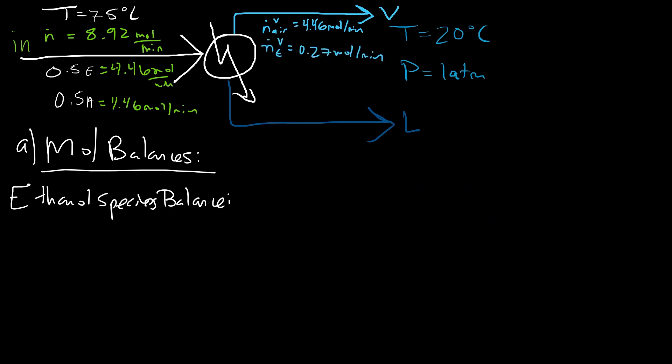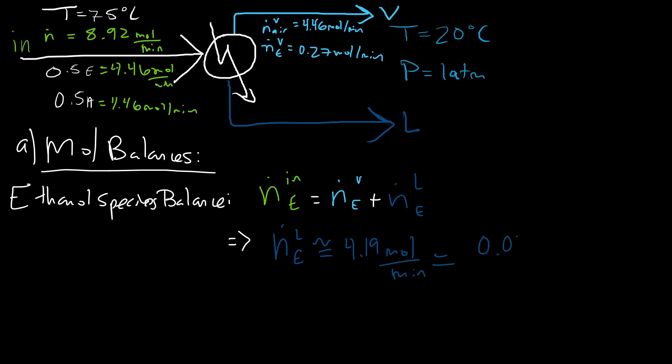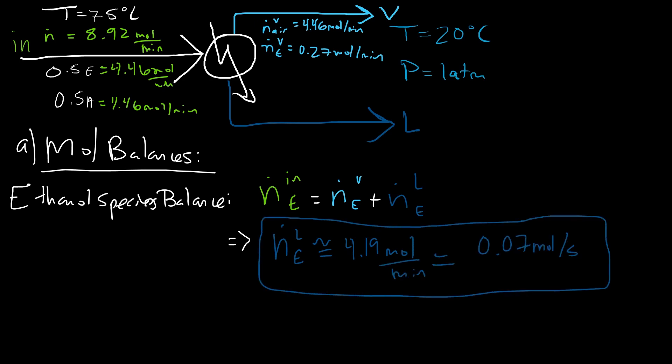The molar flow rate of ethanol in the vapor stream is 0.27 moles per minute. Now doing the total ethanol species balance: ethanol in equals ethanol vapor out plus ethanol liquid out, giving an ethanol liquid flow rate of approximately 4.19 moles per minute. Dividing by 60 seconds per minute, the condensation rate is 0.07 moles per second. I hope this video has been helpful — please like, comment, subscribe, and I'll see you in video two.